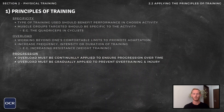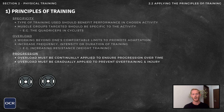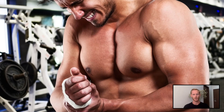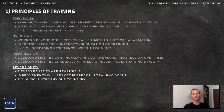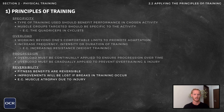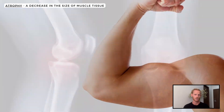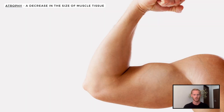Progression refers to the need for overload to be continually applied. Once the body has adapted to a certain level of demand, the level must again be raised if further improvements are to be made. It's important that progression is gradual, as pushing the body too hard too soon may result in injury or overtraining. The principle of reversibility states that training effects are reversible and that fitness benefits will be lost if training intensity falls or breaks from training are taken. For example, a rugby player who's unable to train due to injury will experience atrophy, or a reduction in muscle mass.